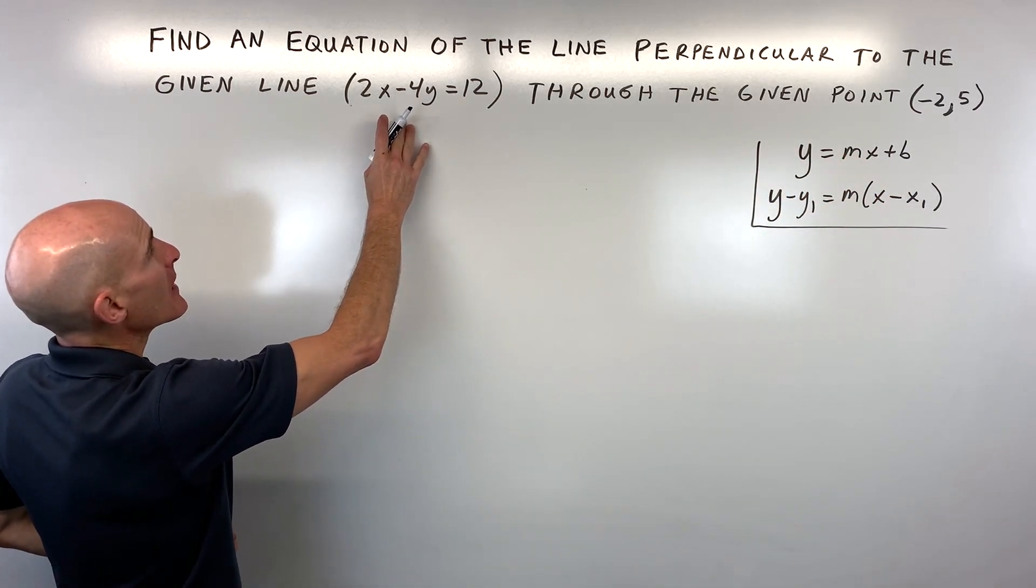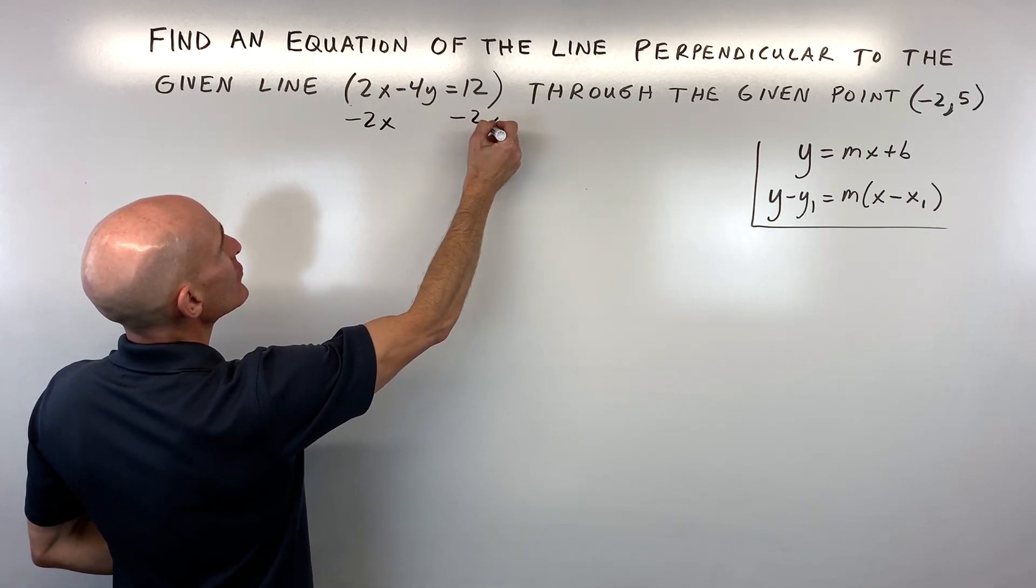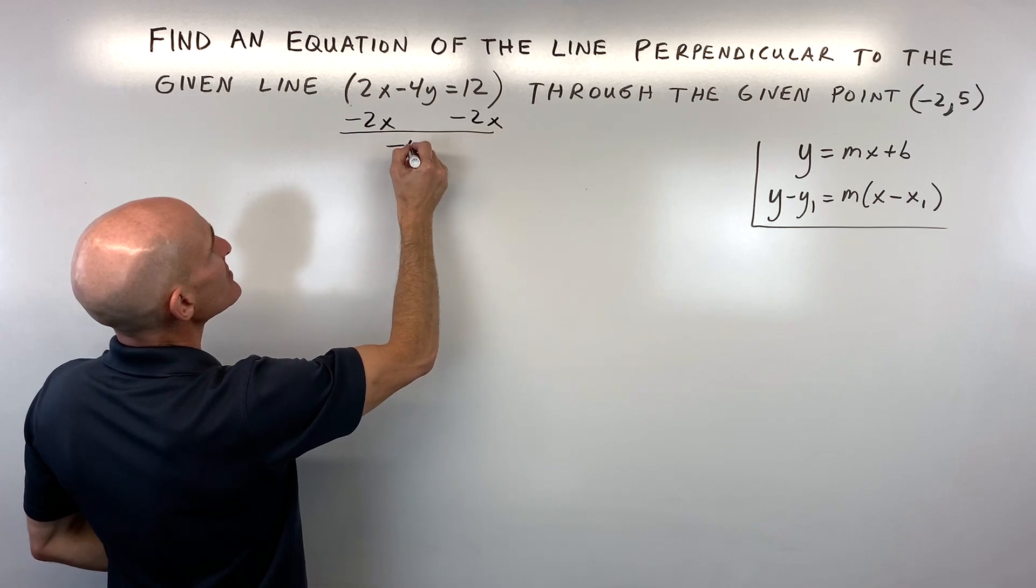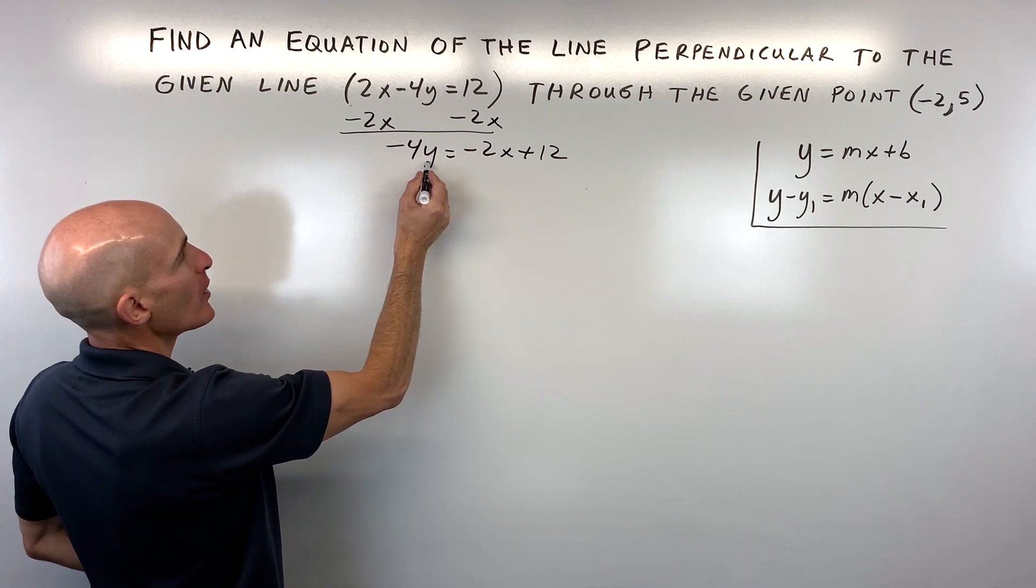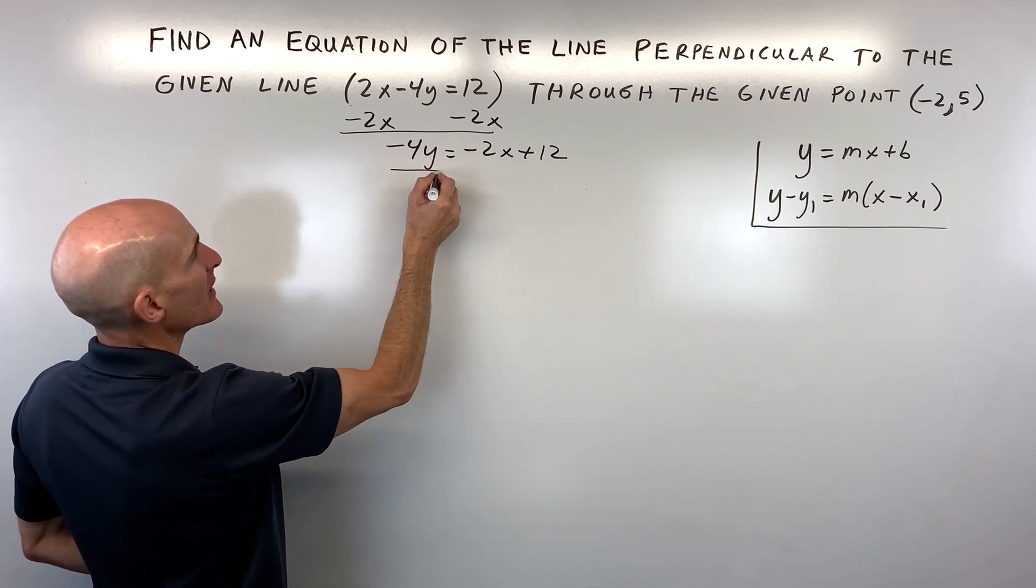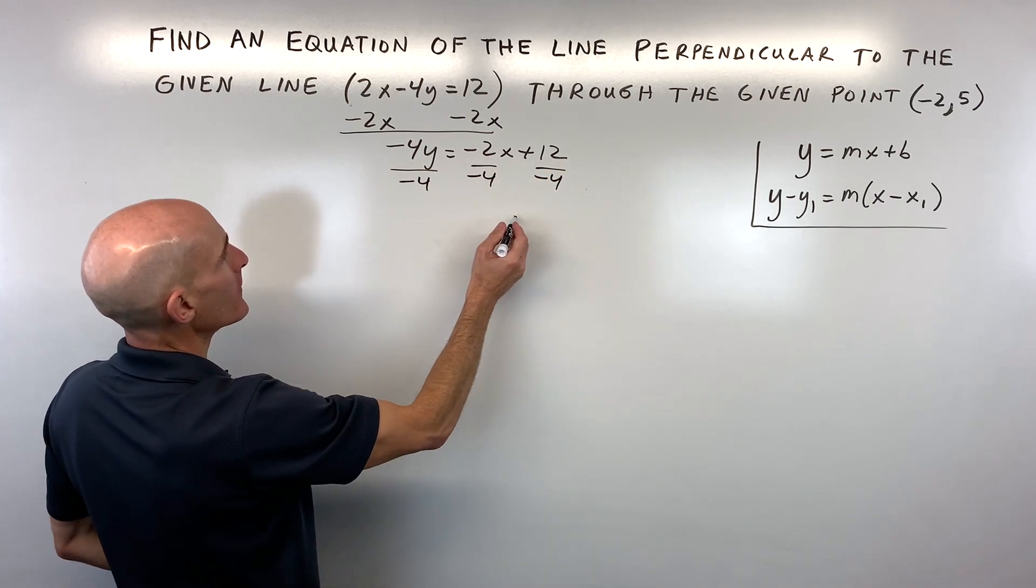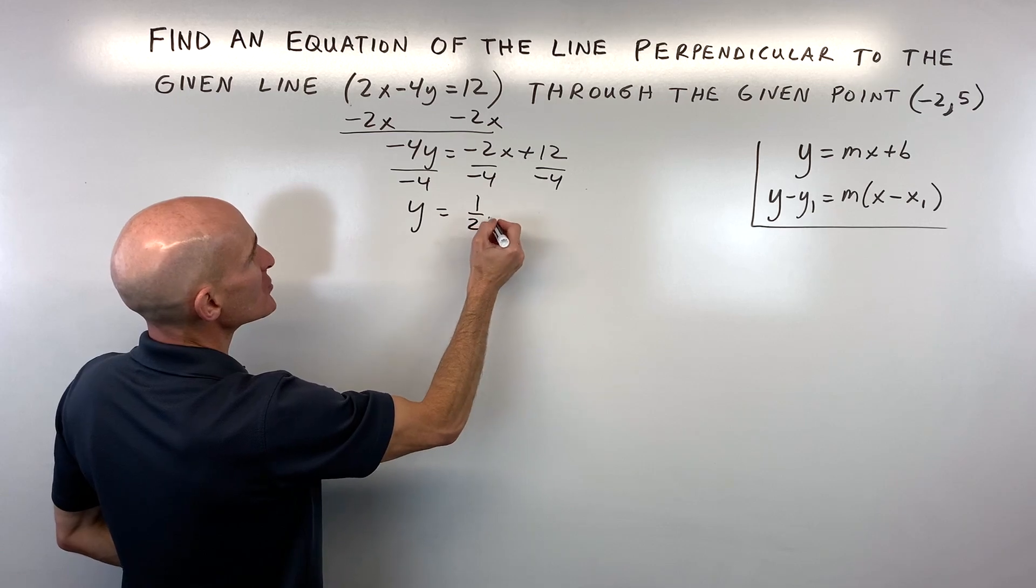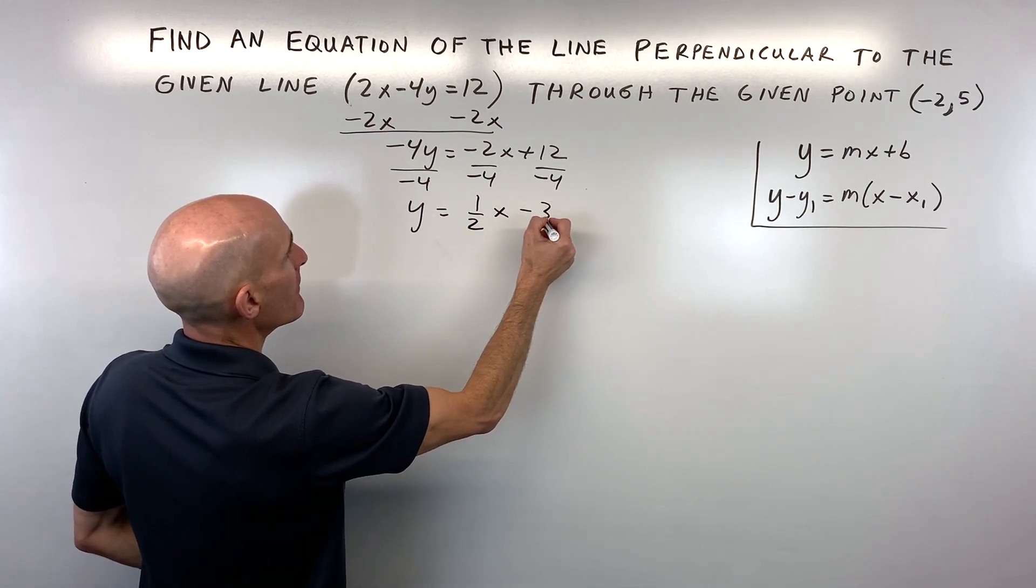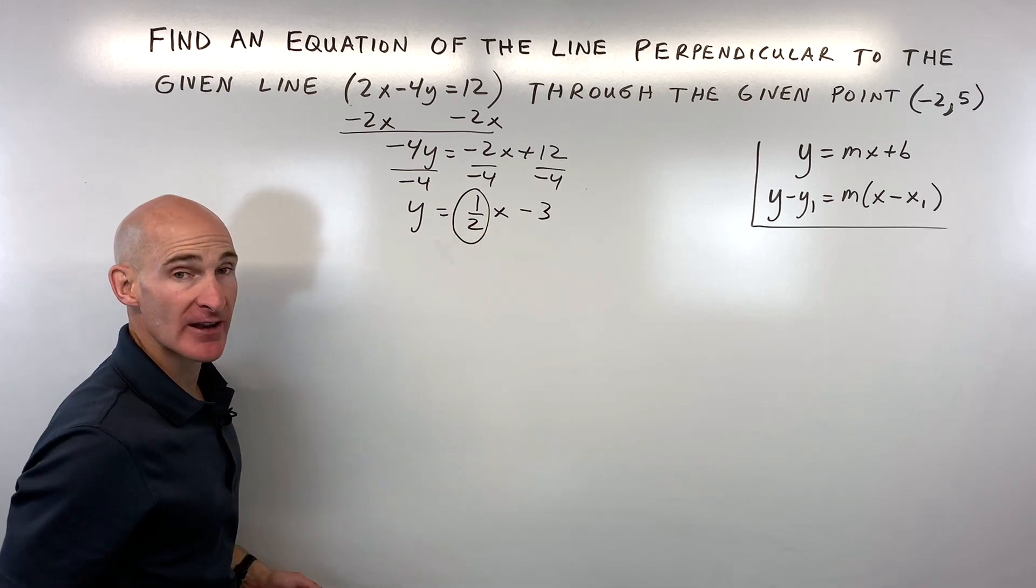Let's go ahead and do that by getting y by itself. I'm going to subtract 2x from both sides of the equation. That gives us negative 4y equals negative 2x plus 12. We want to solve for y, so instead of multiplying by negative 4, let's divide both sides by negative 4. That gives us y equals 2 fourths, which reduces to 1 half x minus 3. You can see this number here to the left of x or in front of x - that's our slope.